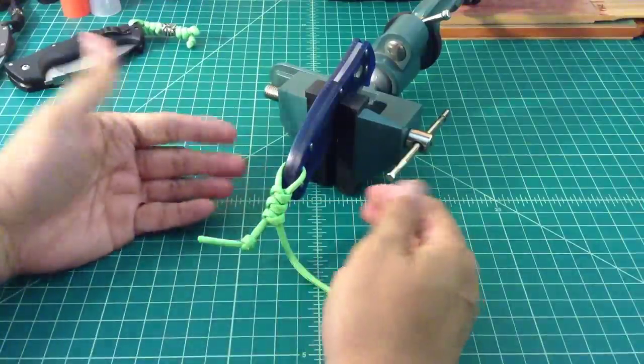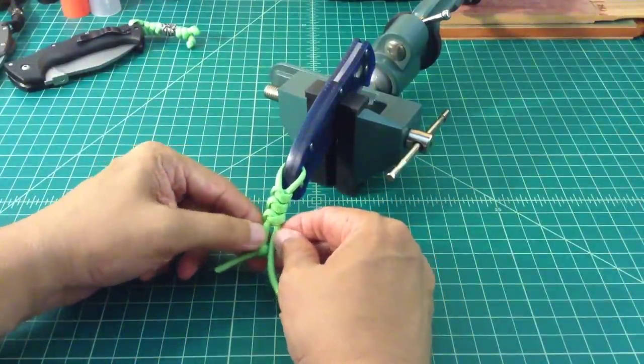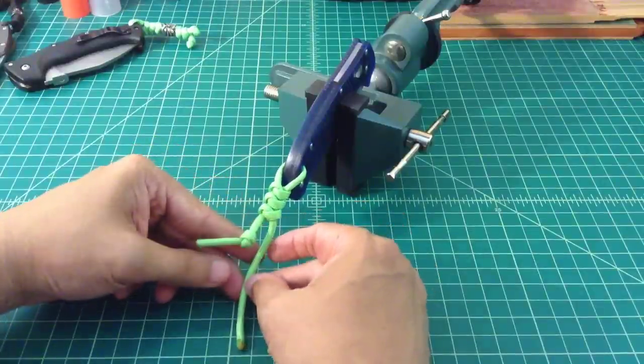But anyhow as you can see this is a pretty easy lanyard to do. If you're going to put a bead on this might be the time to do it. You can just put these two pieces through, slide a bead on it and tie a couple more knots.